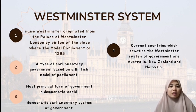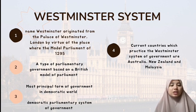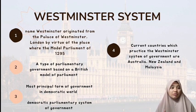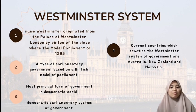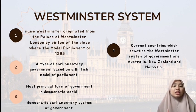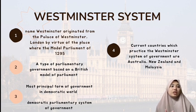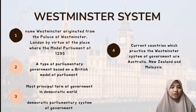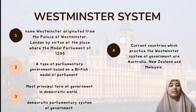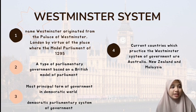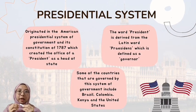The Westminster system of parliamentary government comprises the main features of the British constitution. The Westminster system practices the concept of check and balance, in which the power is separated into three different branches: the executive, the legislature, and the judiciary. Countries that currently practice the Westminster system of government are Australia, New Zealand, and Malaysia.